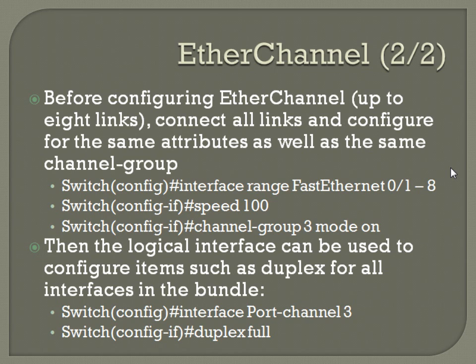The interface range command is very helpful on switches in general. Interface range fastethernet 0/1-8, speed 100, and then channel-group — your group number, in this case 3 — mode on.